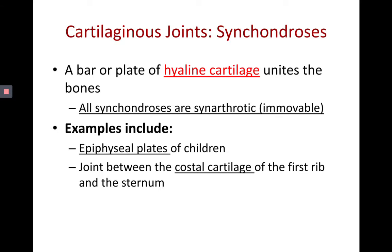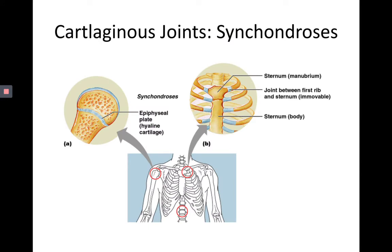All joints that are held together by hyaline cartilage are synarthrotic. Synarthrotic is a functional classification, and it means immovable. Our examples of synchondroses include the epiphyseal plate — that cartilage allowing for interstitial growth in bones — which will eventually ossify and become an epiphyseal line, but while it's a plate it's a synchondrosis, a cartilaginous joint.